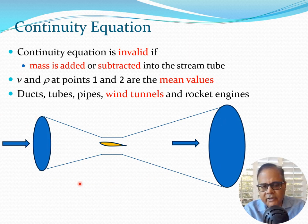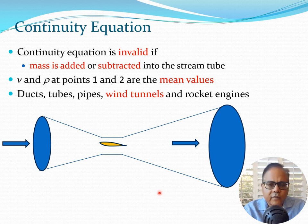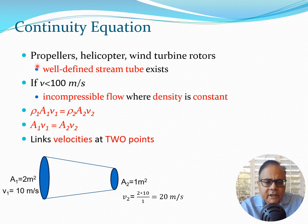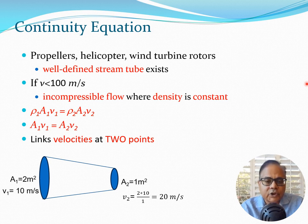For example, in a wind tunnel the air enters, speeds up through a contraction section where a model (such as an airfoil cross-section) is placed, and then slows down as it exits. We can apply continuity at any points along this system since no mass is added. Besides closed systems like ducts and wind tunnels, we can also use the continuity equation for open systems such as propellers, helicopter rotors, and wind turbines, where a well-defined stream tube exists.